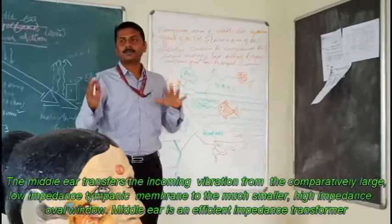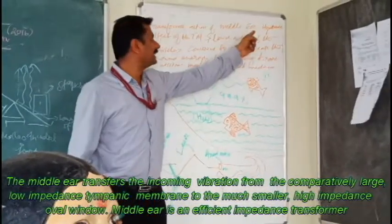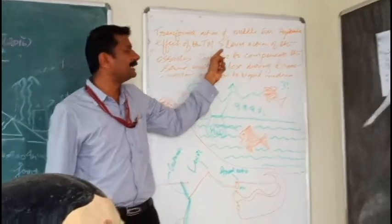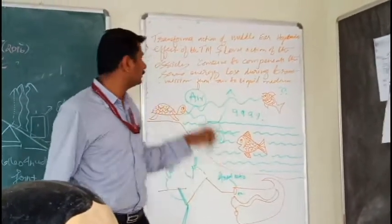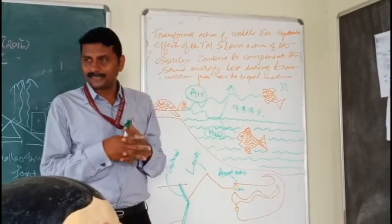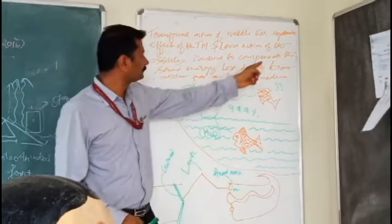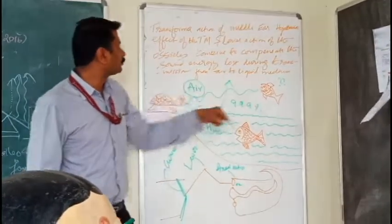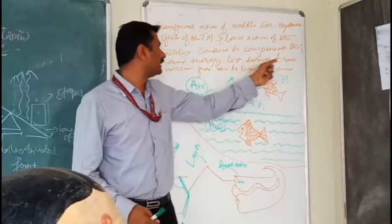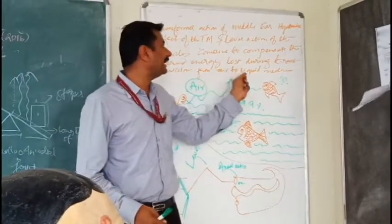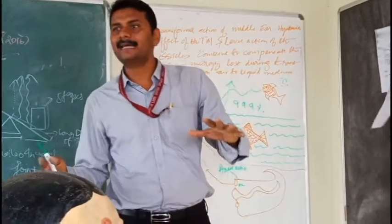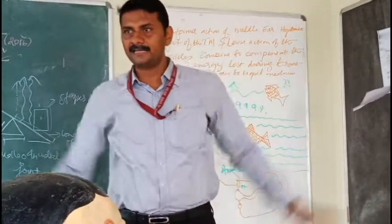So how does it work as a transformer? The basic definition of transformer action of the middle ear is: it's the hydraulic effect of the tympanic membrane and lever action of the ossicles, which combine together to compensate the sound energy lost during transmission from air to liquid medium.